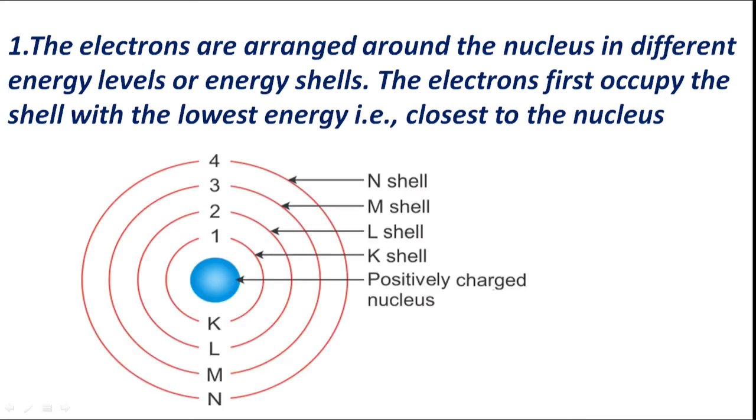For example, the shells closest to the nucleus are K, L, M, then N, or 1, 2, 3, 4 in that order.